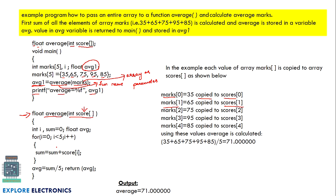Now we calculate the average inside the function. We use a for loop starting at i=0, i less than 5, incrementing i. Sum starts at 0. In each iteration: sum = sum + score[i]. The score array contains 35, 65, 75, 95, and 85. In the first iteration: 0 + 35 = 35. In the second iteration: 35 + 65 = 100, and so on.